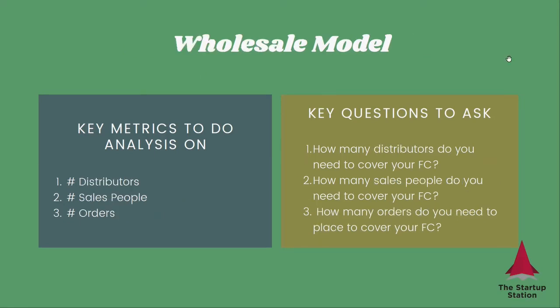The last example is the wholesale model. Here you want to think about the number of distributors, the number of salespeople, or the number of orders, to answer: how many distributors, salespeople, or orders do you need to place to cover your fixed costs? In order for you to have a certain number of orders, you need a certain number of distributors that will place those orders. And in order to have a certain number of distributors, you need a sales force — assuming that's how you convert distributors — in order to put in place those contracts.